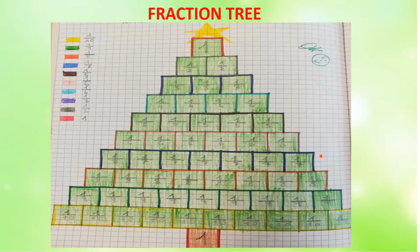Here you can see the same fraction tree can be done on a graph paper too. The boxes are already available in graph paper. You can represent the colors just as a border — different colors like yellow, green, blue, red, brown, pink — whatever colors are available with you.